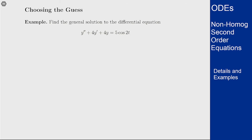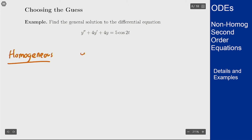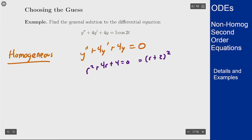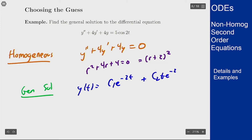With the first example we have y double prime plus 4y prime plus 4y equals 5 cosine of 2t. We break this into two parts: the homogeneous part and the non-homogeneous part. For the homogeneous part, the characteristic equation is r squared plus 4r plus 4 equals 0, which factors as (r+2) squared with a double root at negative 2. So the general homogeneous solution is y(t) = c1 e^(-2t) + c2 t e^(-2t).